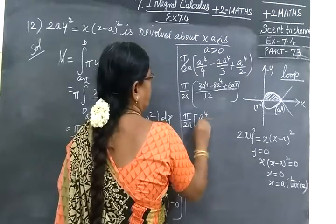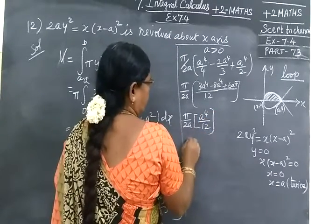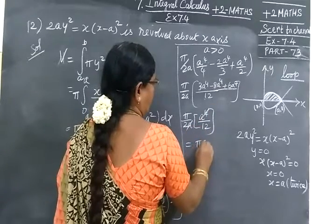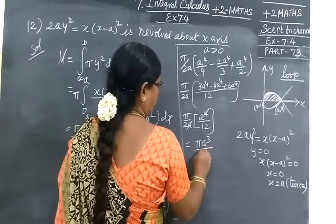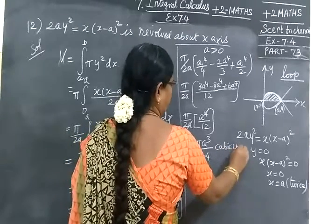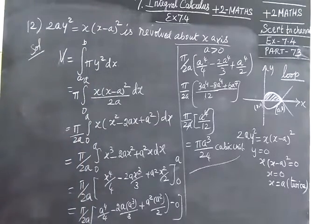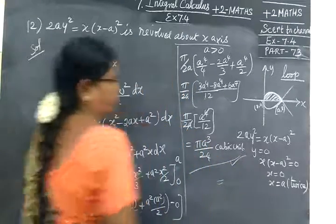You can cancel it now. πA³ by 24. Here you write cube unit. Now we see the answer for this: πA³ by 24. This is correct.